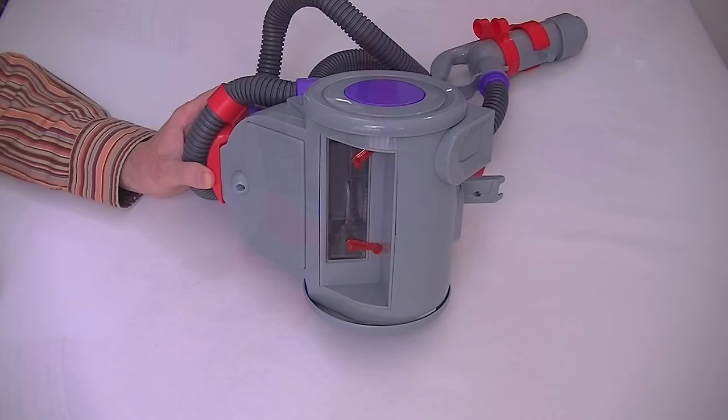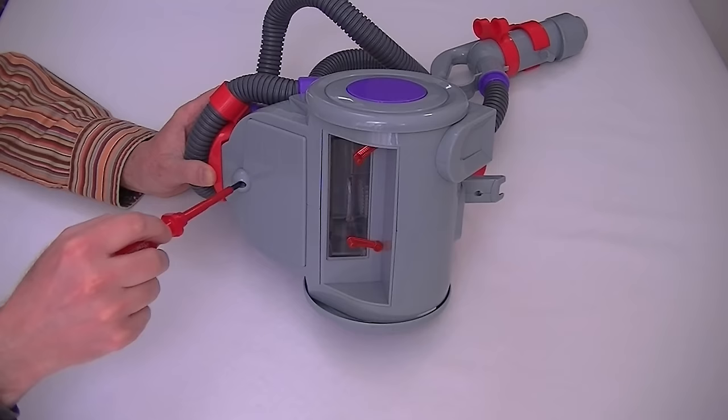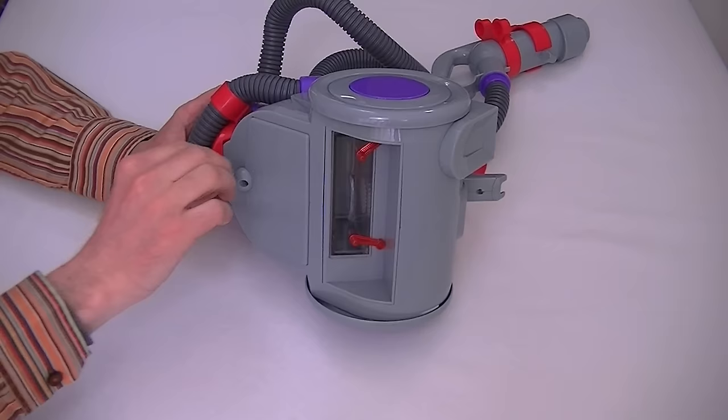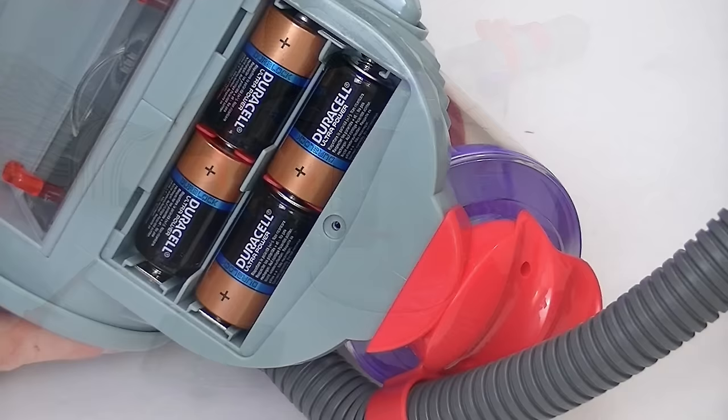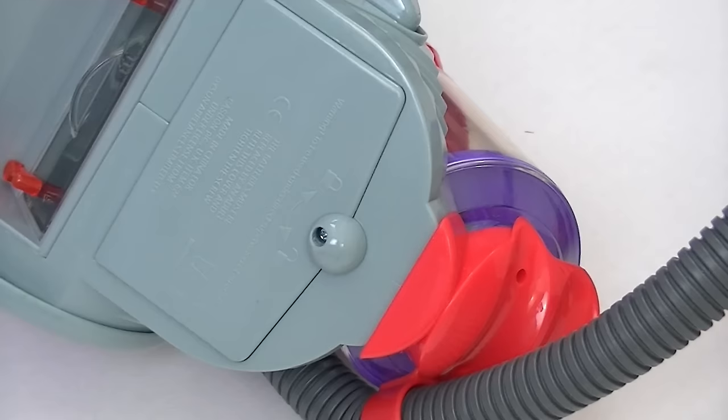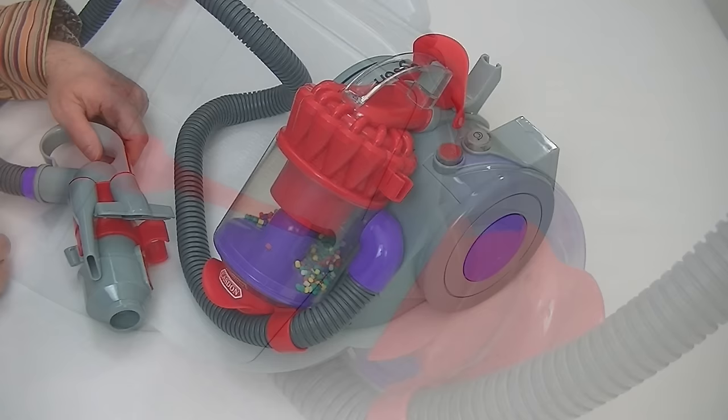Before I can use this toy Dyson vacuum cleaner, I need to insert four C-sized batteries into this compartment here. So I just need a screwdriver just to remove the cover. There we go. And now I can put my batteries in that compartment. So with four batteries installed, I just need to pop the cover back on and tighten up the screw.